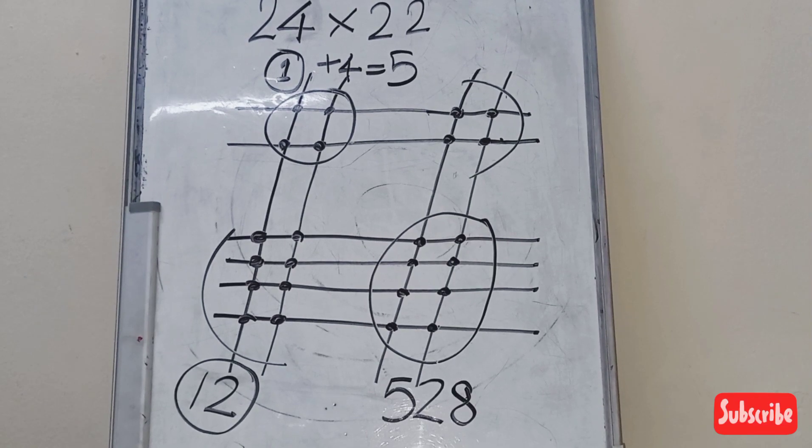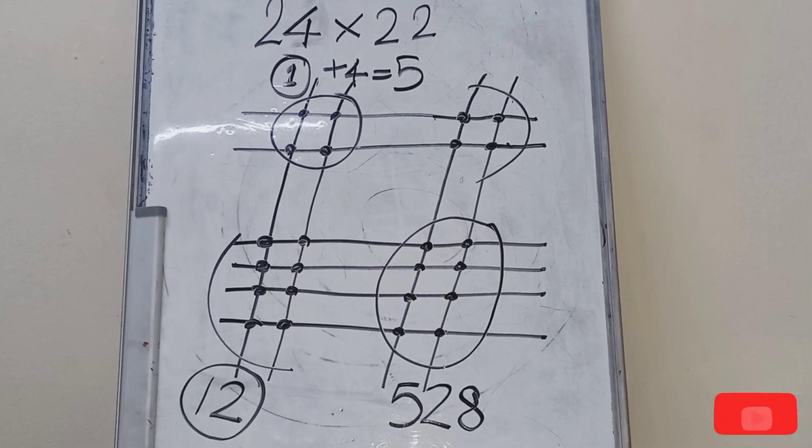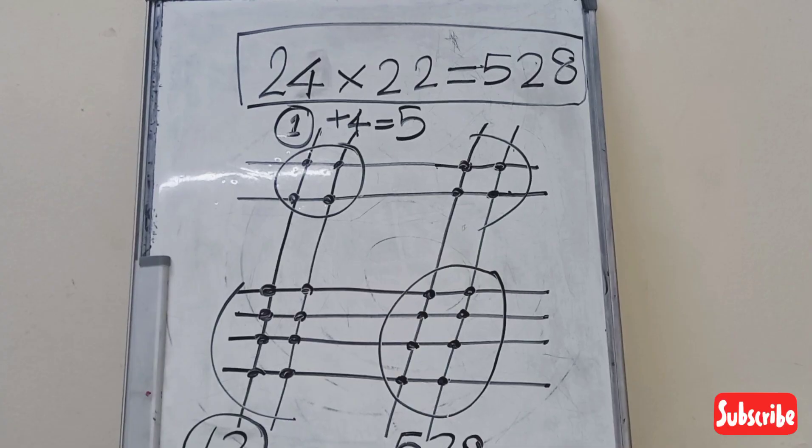So 528 is the product. 24 into 22 is equal to 528. I hope all of you understood this math trick on how to multiply two digit numbers. This is the Japanese method for multiplication.